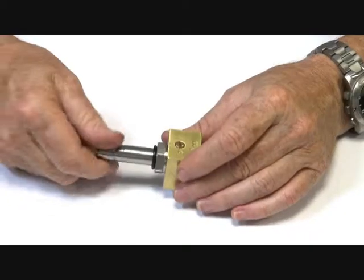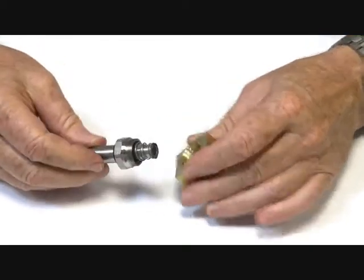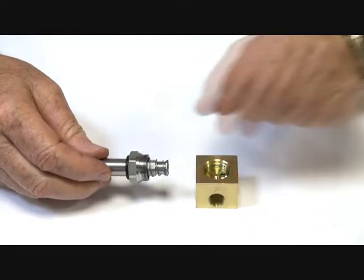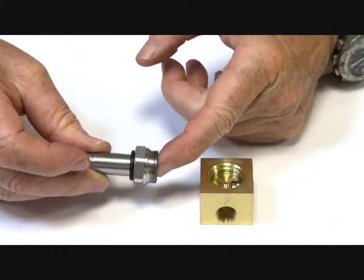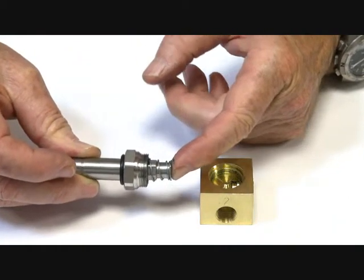Here we have the armature assembly. Normally when the actuator is operated, it pulls up into here. De-energised, it comes back out.